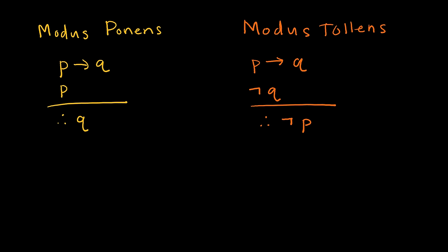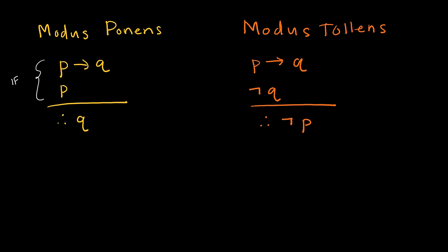Modus ponens says: if we have 'if P then Q,' and then P is true, the result is Q — those three dots mean 'therefore.' This is exactly what we just did: if it rains, then I'll need my umbrella; it rains, therefore I need my umbrella. To write this as a tautology, I would say: if (P then Q) and P, then Q is true. That's how I would write it as a tautology.